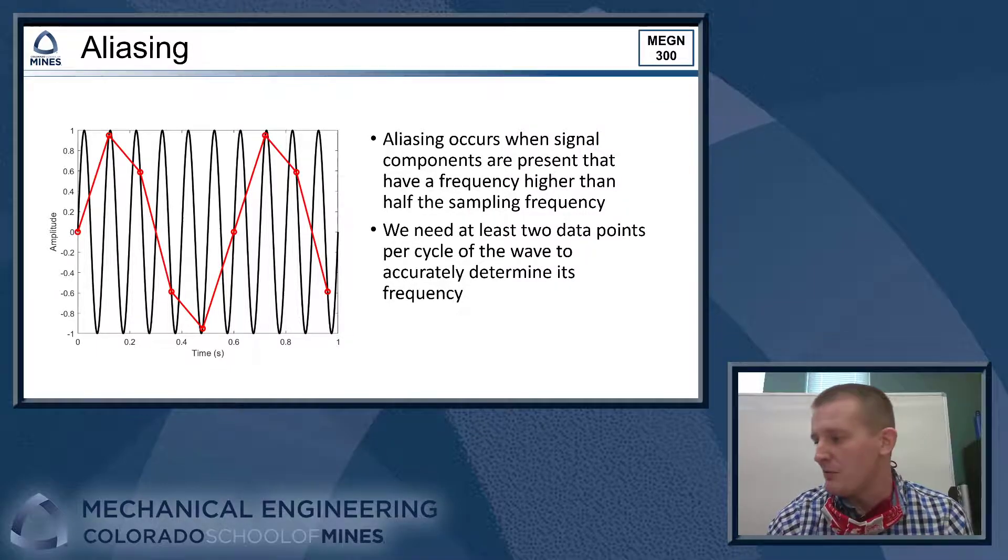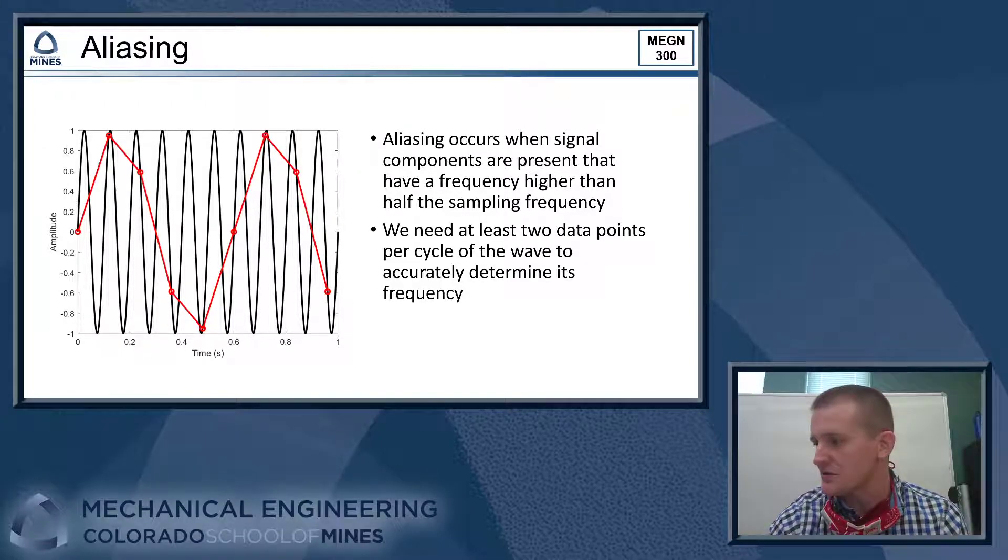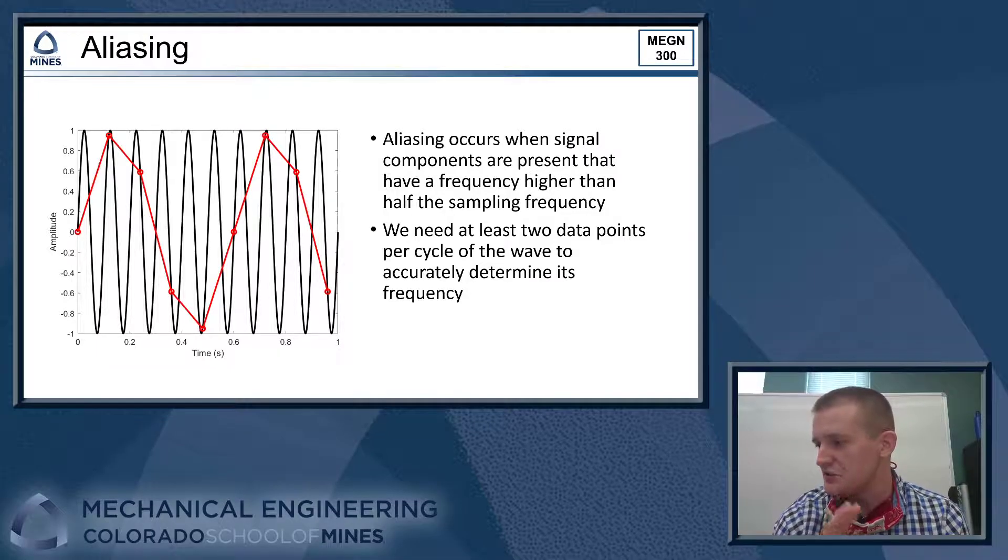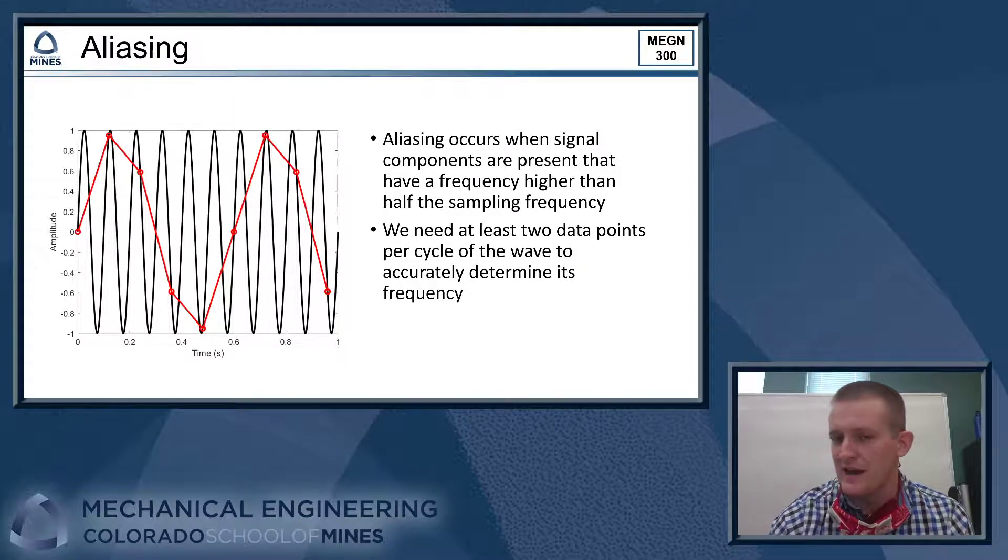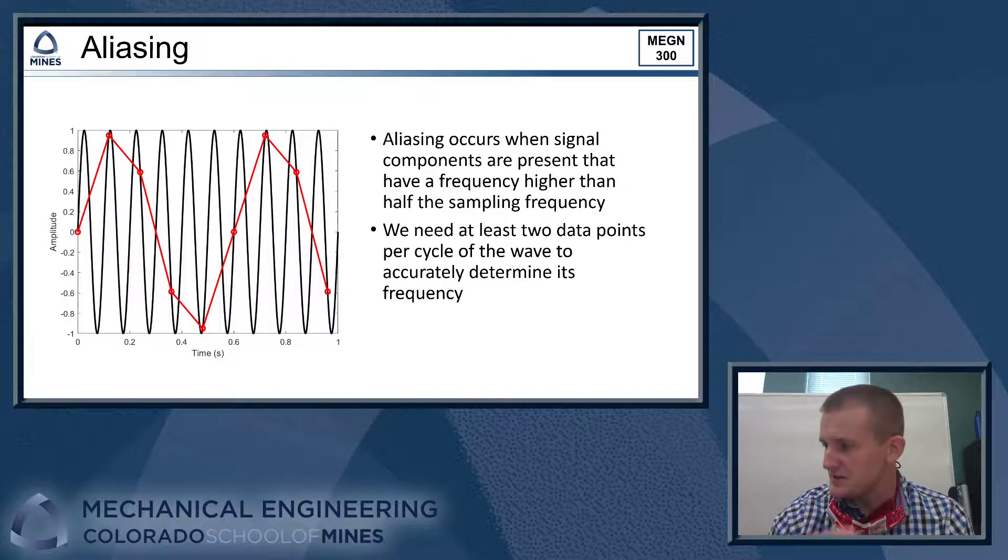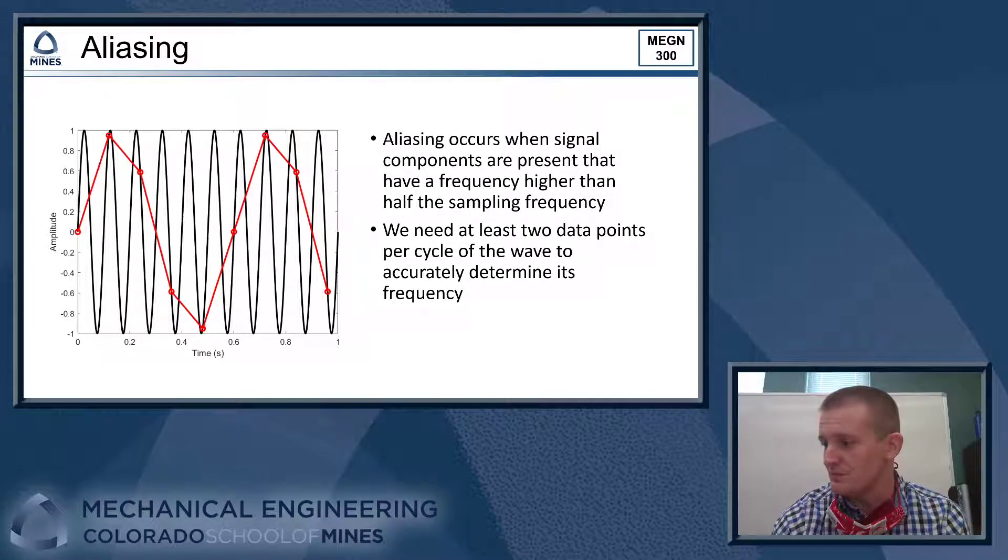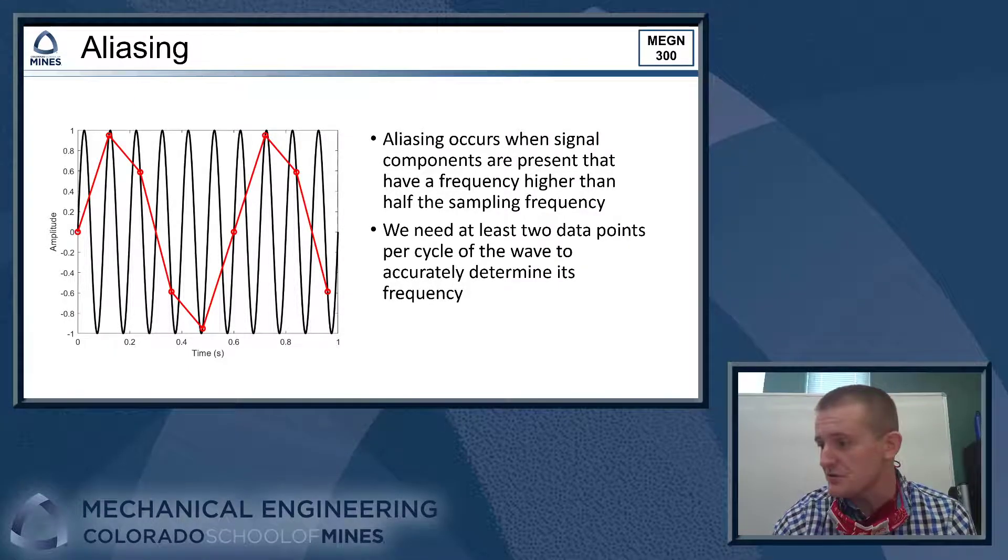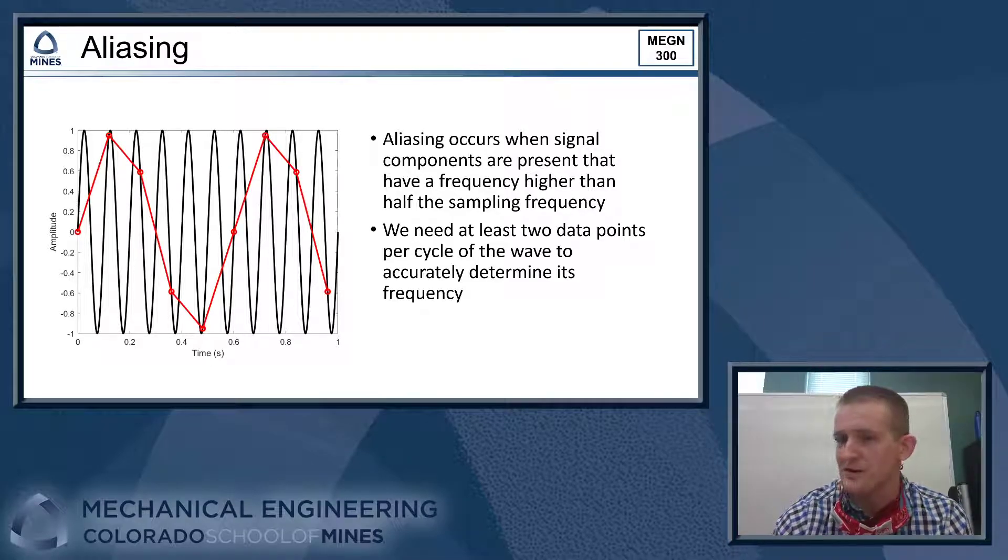This happens when we have signal components that have a frequency that's higher than half of our sampling frequency. We always need to get at least two data points on a full cycle of the signal to be able to accurately determine what its frequency is. So what happens is if we have a sine wave signal that's doing more than a full period between our two data points, we can't tell if just one period of that sine wave has passed or two periods or 200 or 1,000 periods have passed. We just don't have enough data to resolve what's going on with that sine wave.